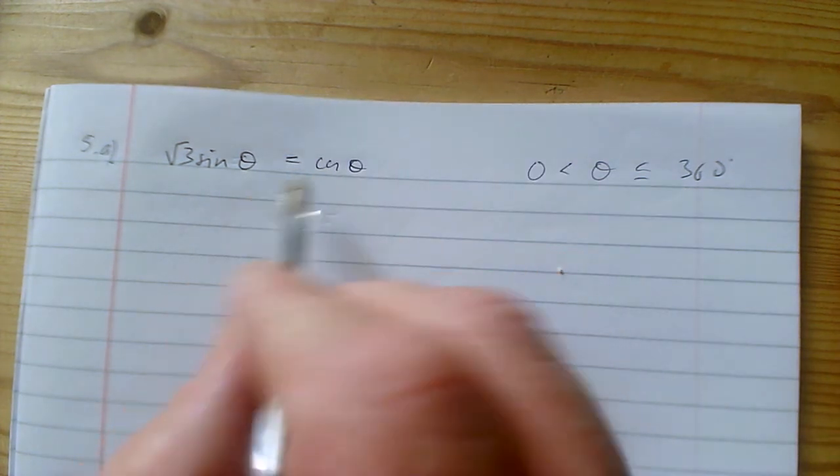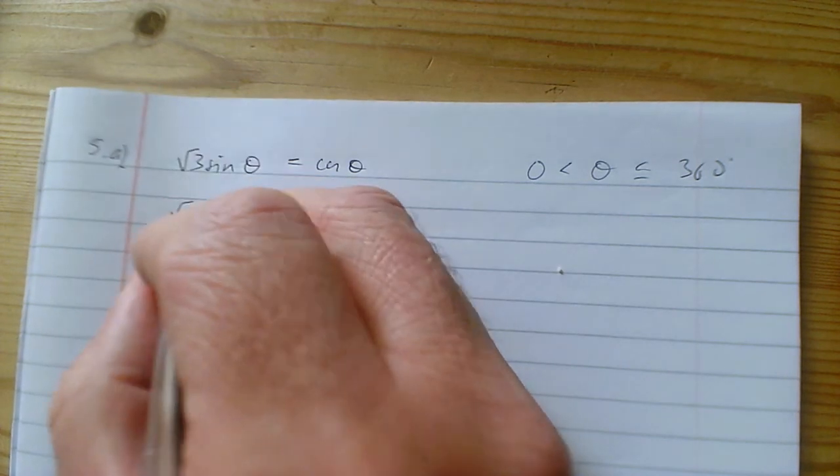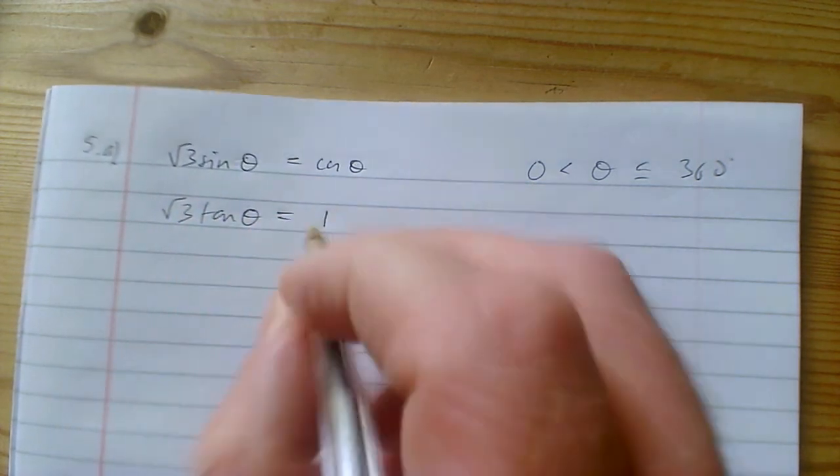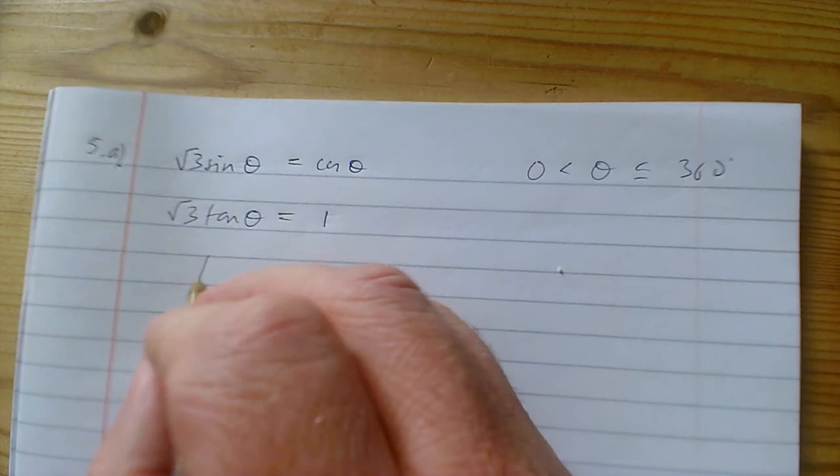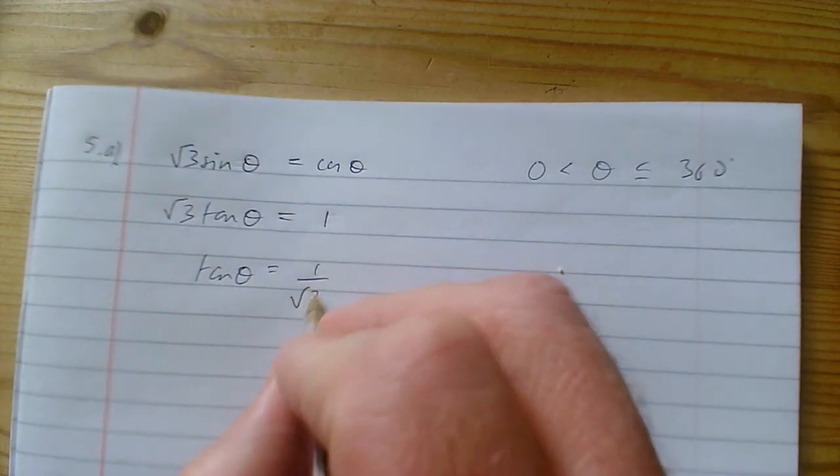If I divide both sides by cos θ, I get √3 tan θ = 1, which means tan θ = 1/√3.